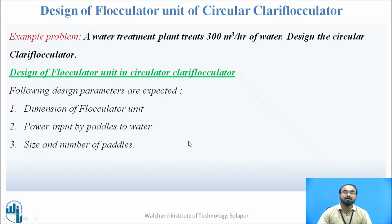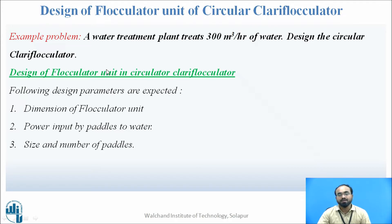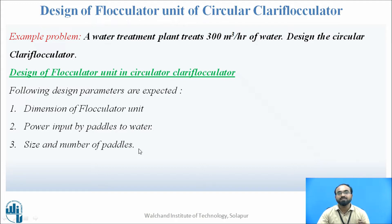Now, how to design a clariflocculator, or more specifically a flocculation unit. In this example, we have to treat 300 cubic meters per hour of water in the circular clarifier. The design of the flocculator unit will cover three parts: design of the flocculator unit dimensions, power input provided to the paddles, and the size and number of paddles to be provided.